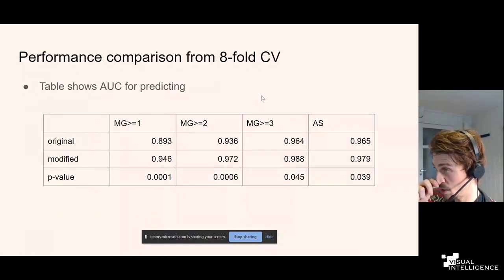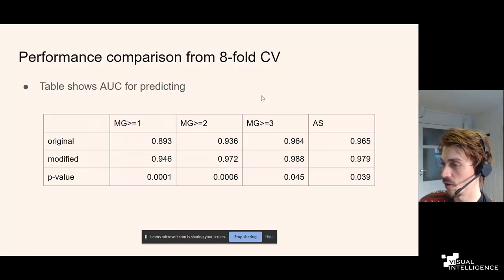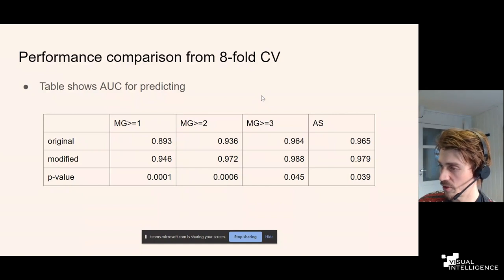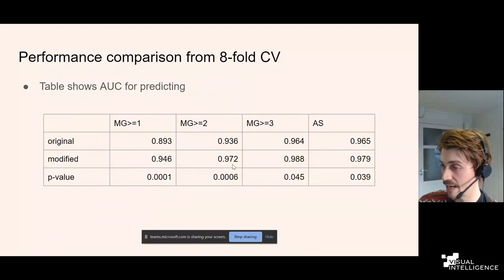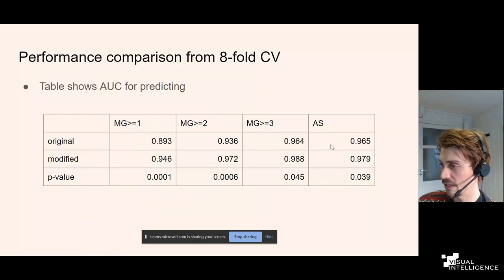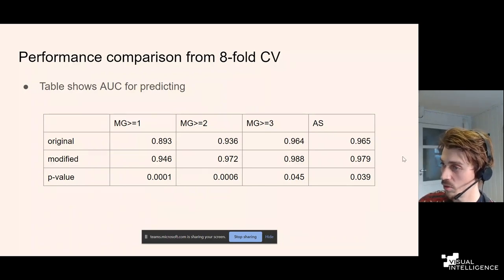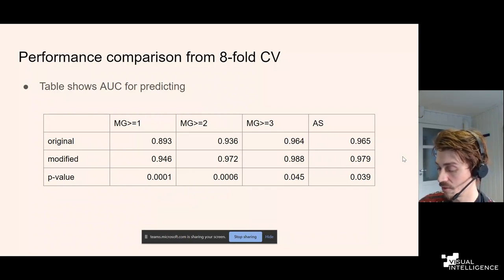We validated this in eightfold cross-validation, training networks on inputs from either the original or modified segmentation algorithm and comparing AUC for various targets. For predicting murmur grade 2 or higher, the original achieved an AUC of 0.936 while the modified achieved 0.972, with a very significant p-value. Similar improvements were seen for other targets, including aortic stenosis prediction. Improving segmentation performance clearly benefited the network.